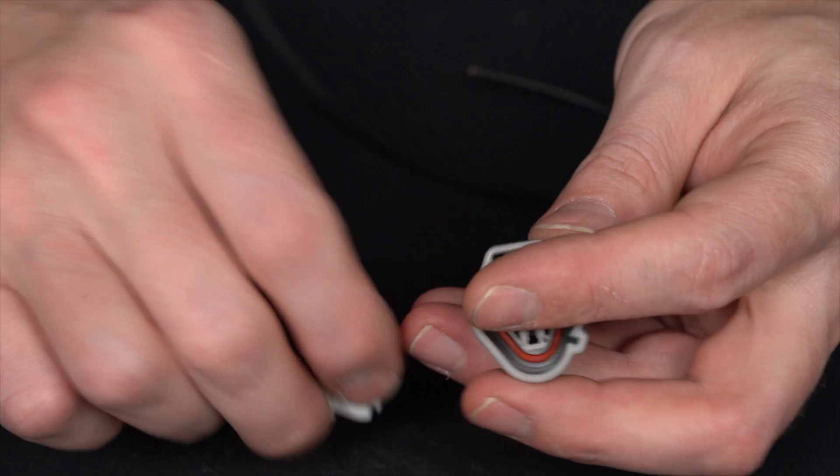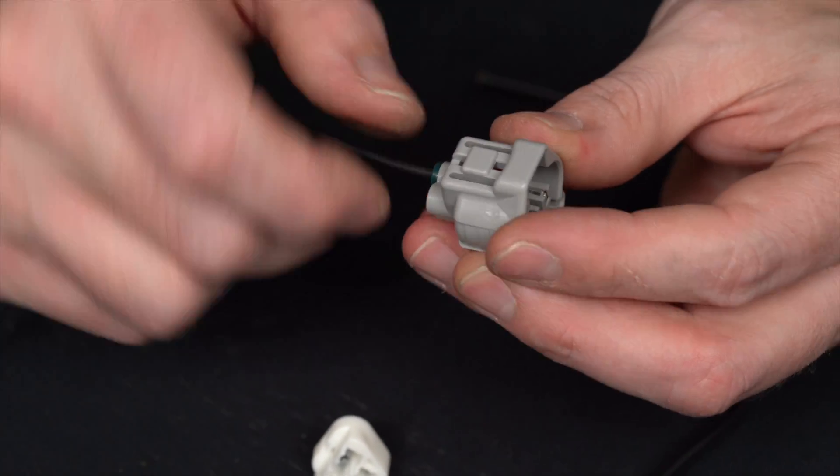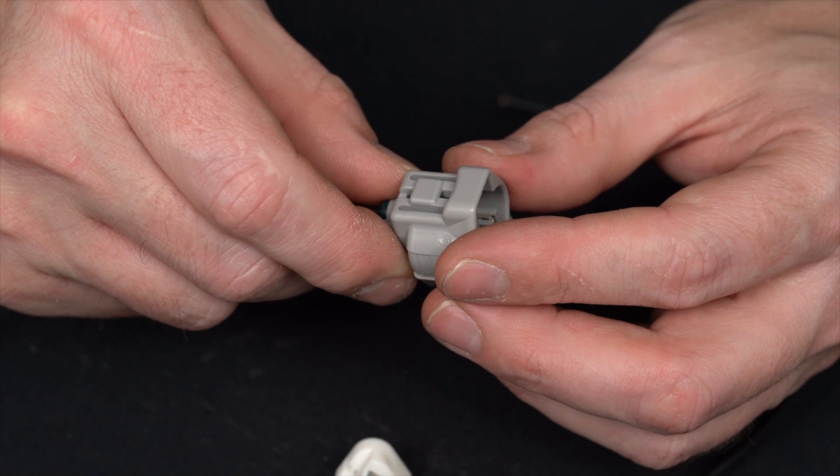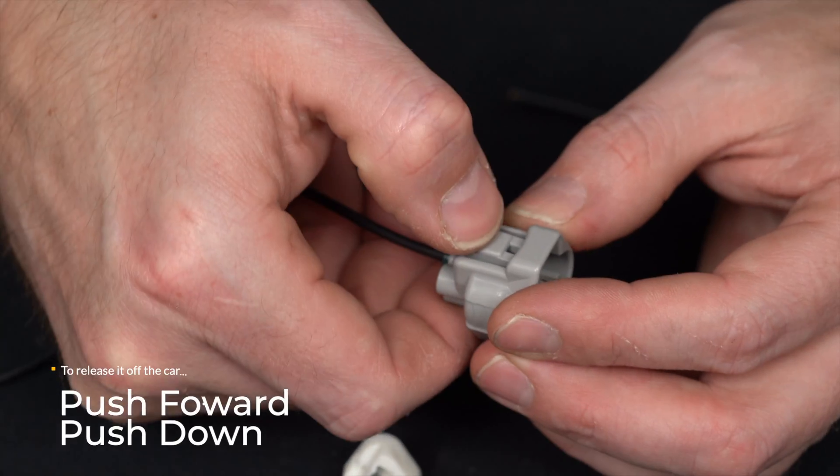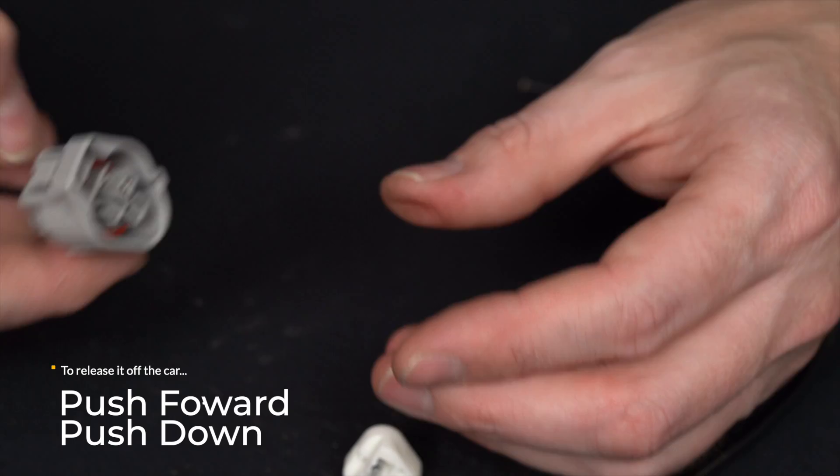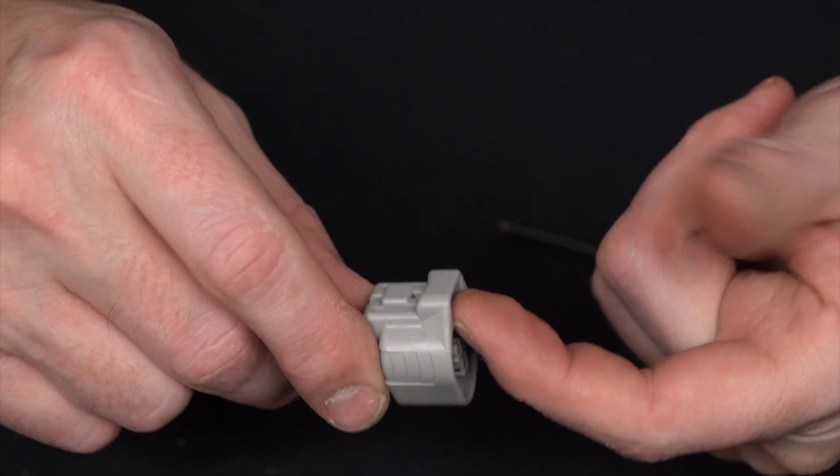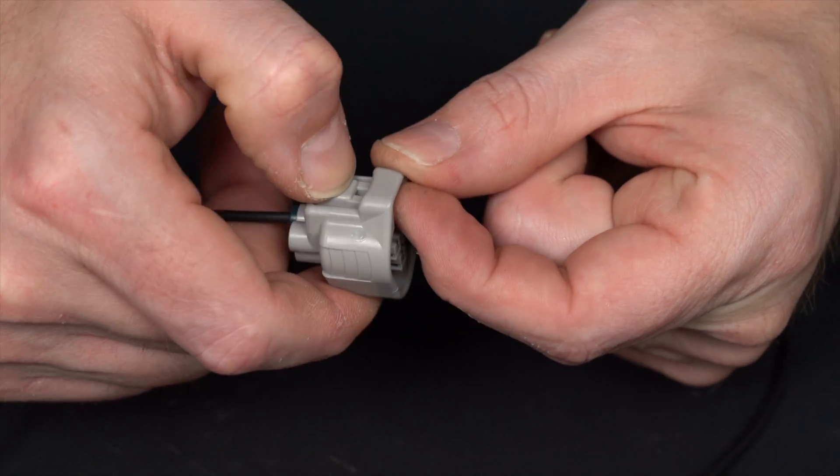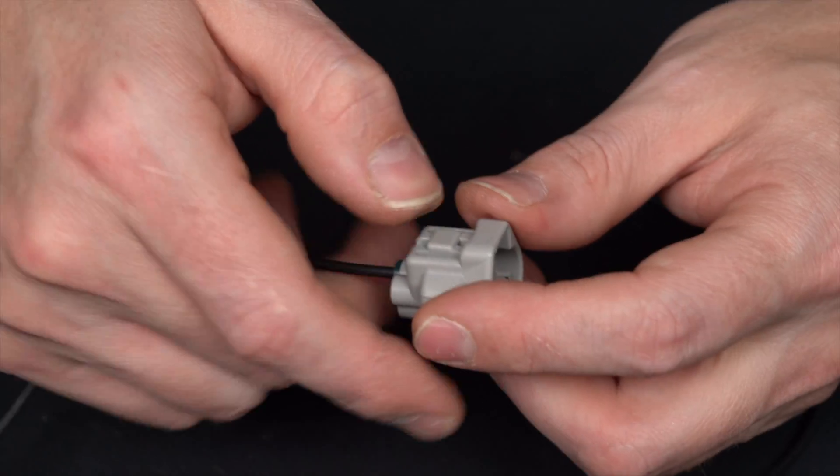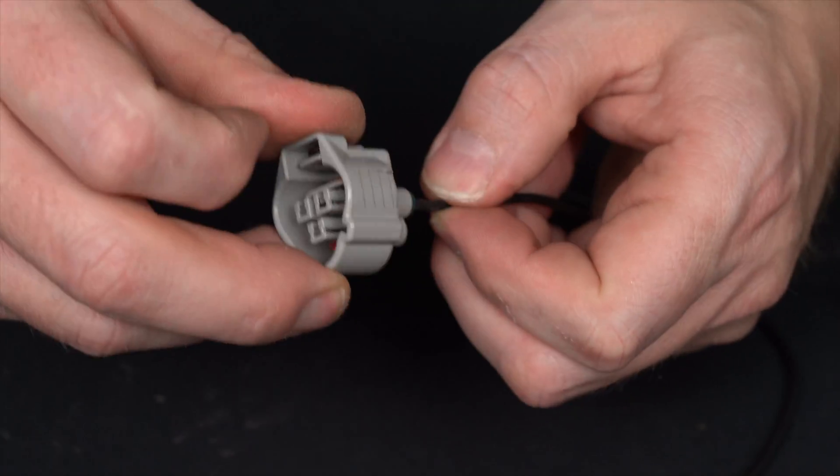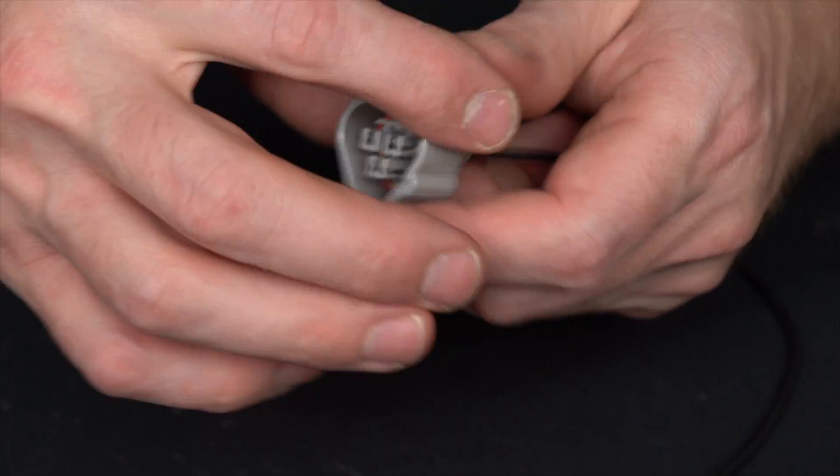Same deal, actually, if you're trying to remove a connector off the car. Whenever you're pushing on that release tab, there's tension on it. So we're going to kind of push forward, push down, and release it off the car. What happens is the rubber seal that's in there is pushing back on the connector, so it's putting tension on that catch and you're not able to release it as easy. So kind of push it forward to release the connector. With your terminals, push them forward a little bit, hit that release, and then they'll pop out.